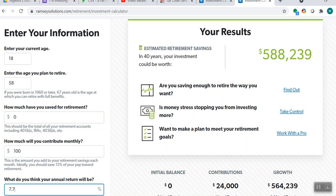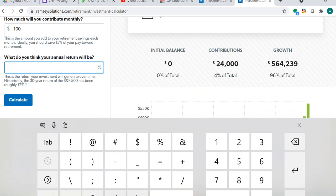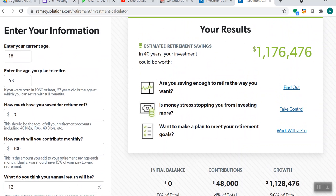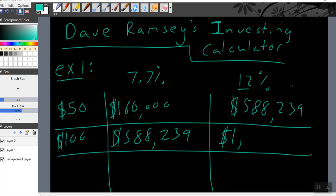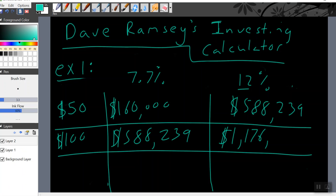But what if you were to invest this $100 a month, not at 7.7? What if you were to invest this $100 a month at a 12% return? Well, at this point, guys, you would retire at 58 with $1,176,476. So by you simply investing $100 a month, and if you were to average that 12% rate, that's what you would make.